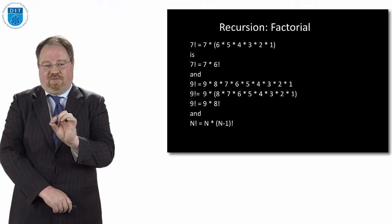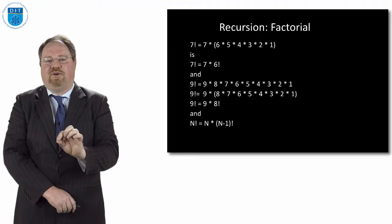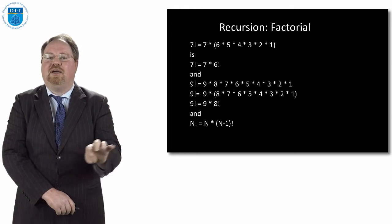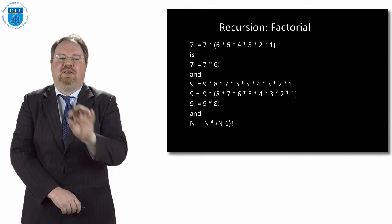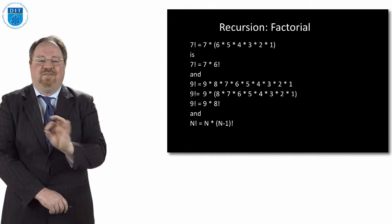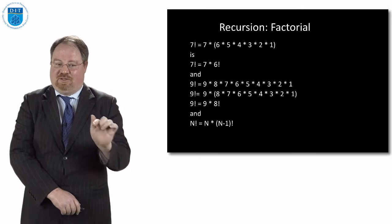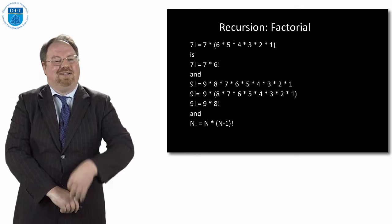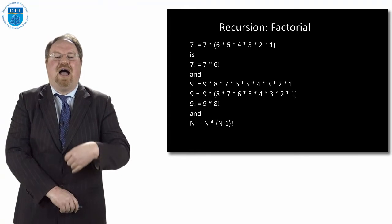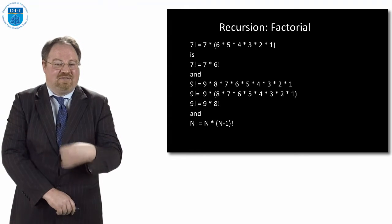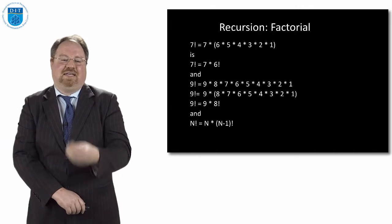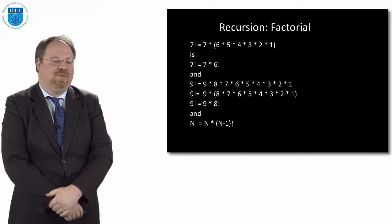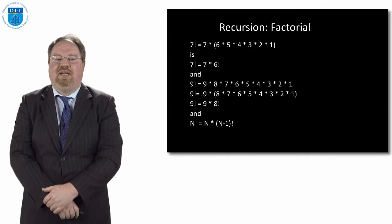That means 4 factorial is also 4 multiplied by 3 factorial. Or, in general, n factorial is n multiplied by n minus 1 factorial. So we can define the function factorial as part of itself — we define it recursively. That is to say, we define factorial in terms of factorial: n factorial is n multiplied by n minus 1 factorial. It's defined as part of itself.